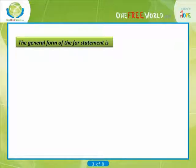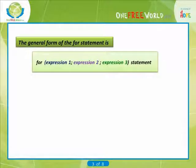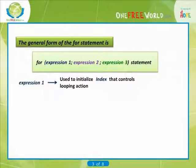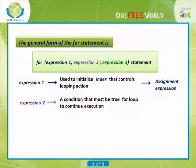The general form of the for statement is: for (expression 1; expression 2; expression 3) statement. Where expression 1 is used to initialize some parameter called an index that controls the looping action and therefore is an assignment expression. Expression 2 represents a condition that must be true for the loop to continue execution and is a logical expression.